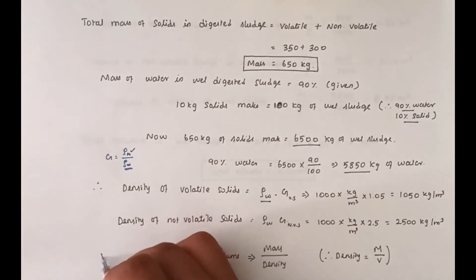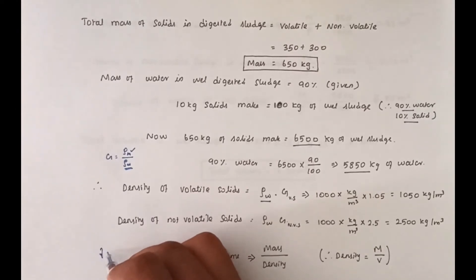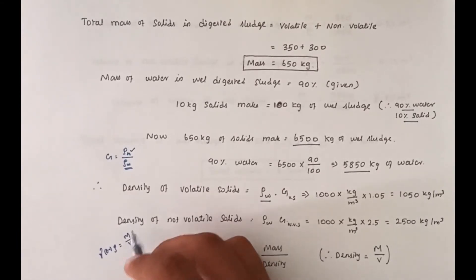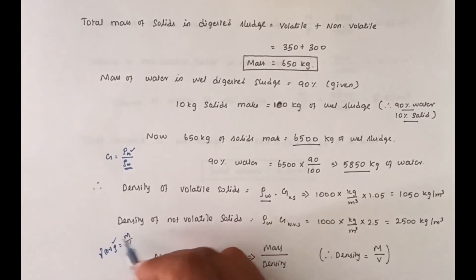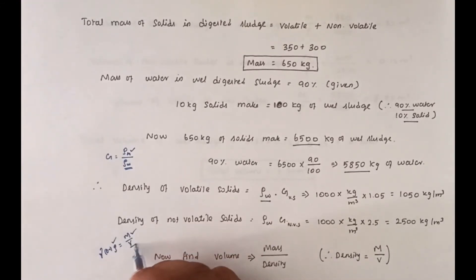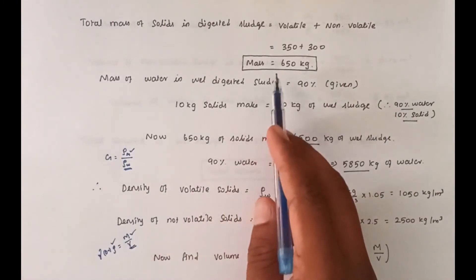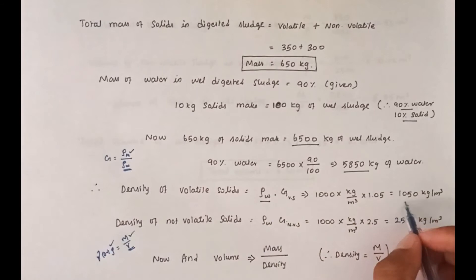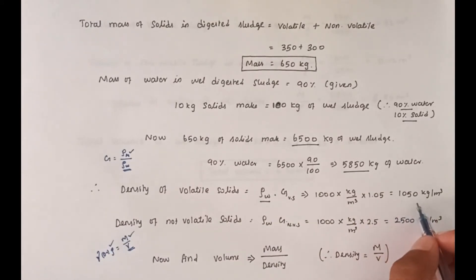Volume is calculated from density = mass / volume, so volume = mass / density. Since we know the density and the mass of each component, we can now calculate the volume of volatile solids, non-volatile solids, and water.